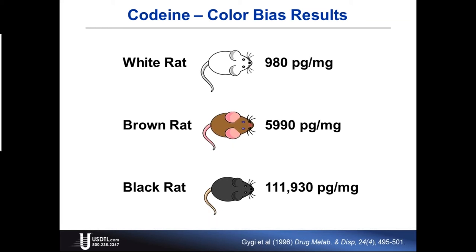The reason for this is that one of the variables with hair color that influences concentration is the amount of pigment, or melanin. The more melanin in the hair, the more drug can bind and the tighter it binds. What was completely amazing was I would not have expected such a huge difference between the brown rat and the black rat — there is a large disparity between the brown hair and the black hair as far as codeine goes.